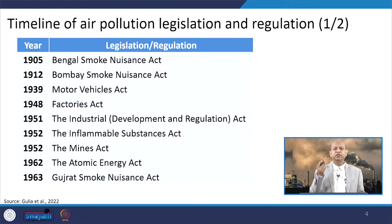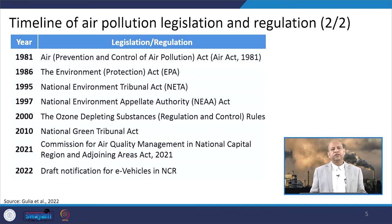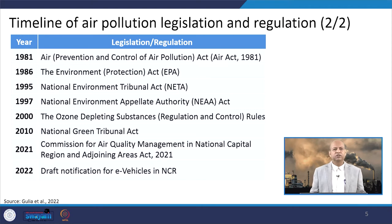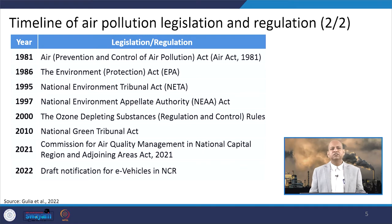In 1952, the Inflammable Substances Act and the Mines Act were passed. In 1962, we had the Atomic Energy Act, and in 1963, the Gujarat Smoke Nuisance Act was formulated. In 1981, the very important Air Prevention and Control of Air Pollution Act — simply the Air Act — was enacted. In 1986, we had the umbrella Environment Protection Act (EPA). In 1995, the National Environment Tribunal Act (NETA), and in 1997, the National Environment Appellate Authority Act. The year 2000 introduced the Ozone Depleting Substances Regulation and Control Rules.